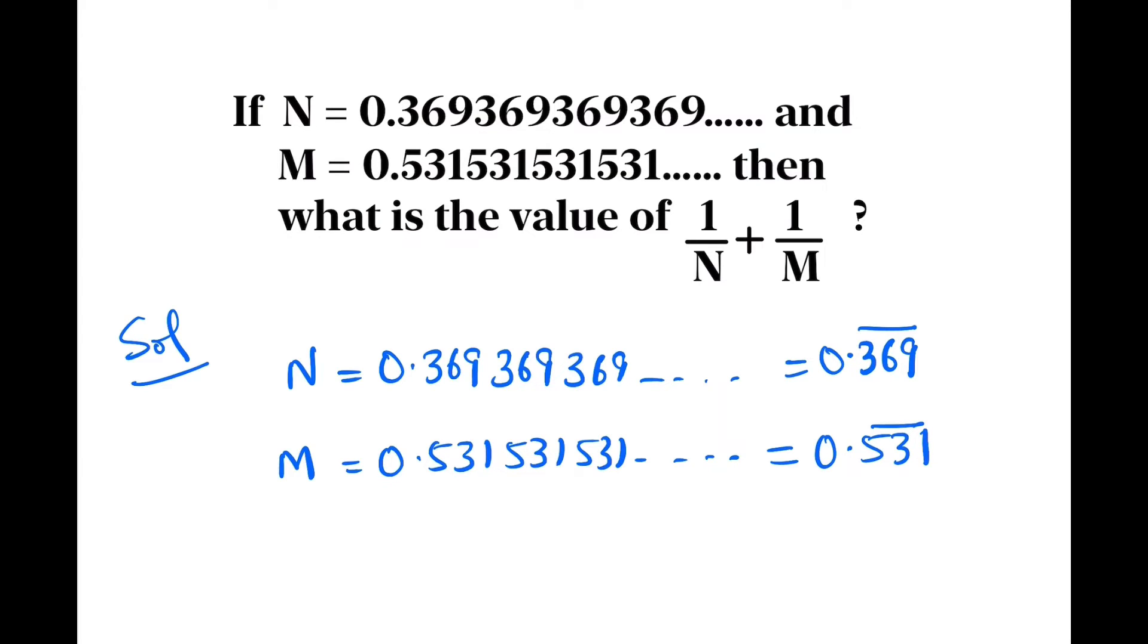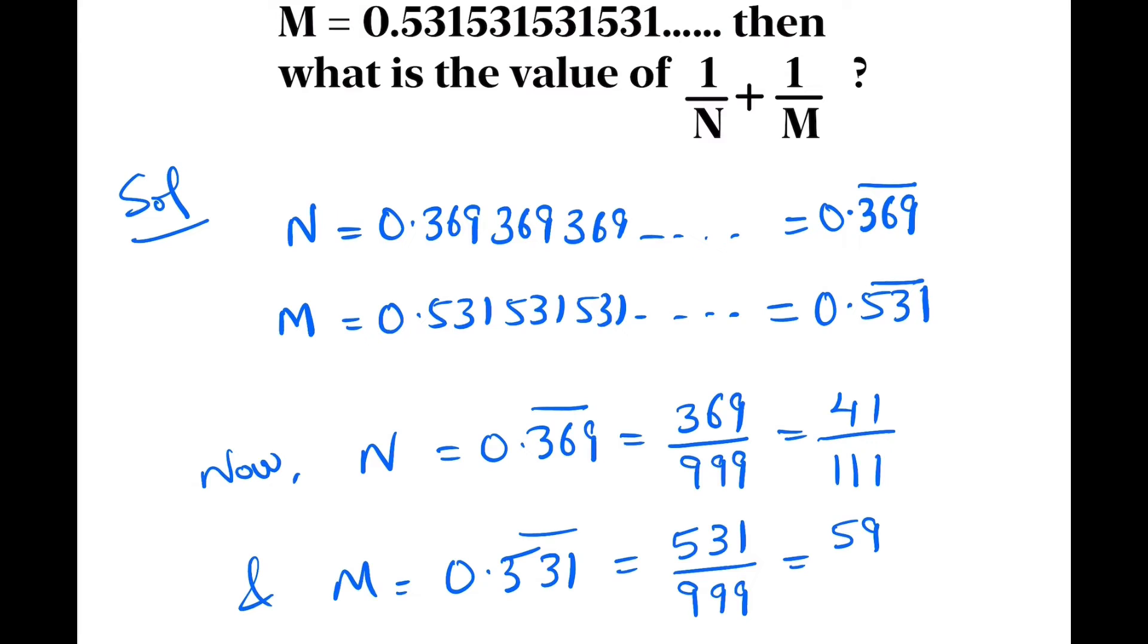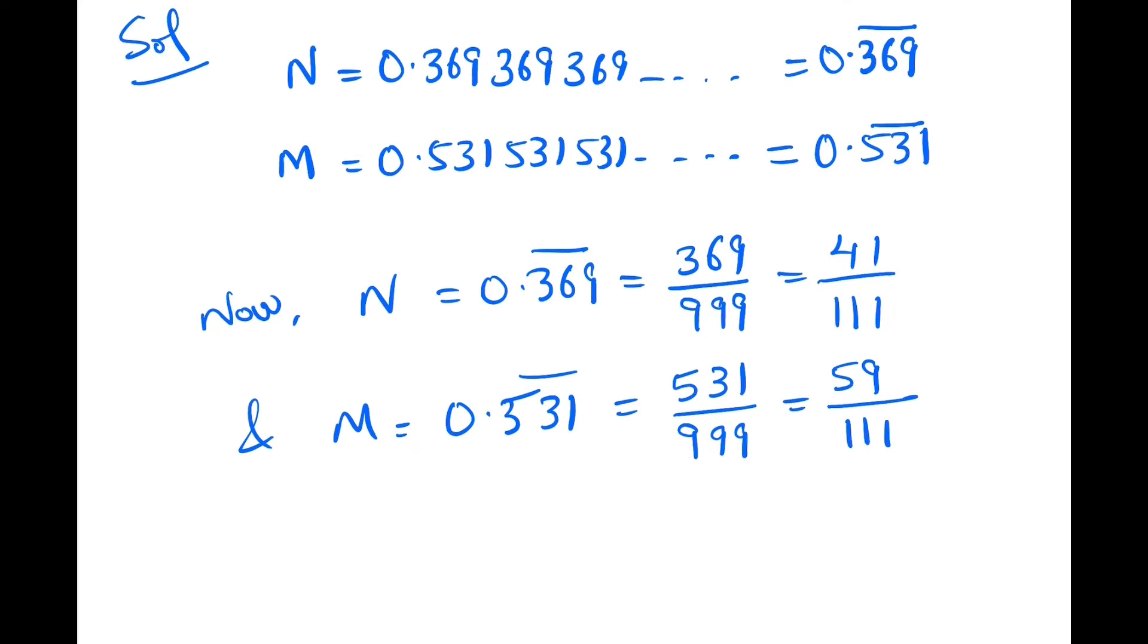Now N equals 0.369 bar, and we can write 0.369 bar equals 369 upon 999, and this is equal to 41 upon 111. Similarly, M equals 59 upon 111.